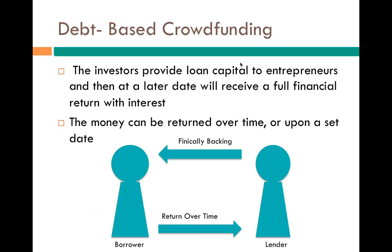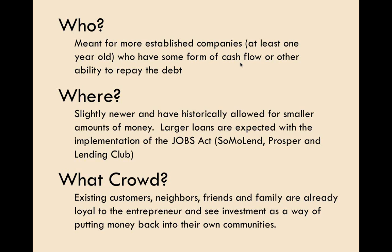Finally, debt-based is the type of platform that SomoLend is. As a borrower, you're paying the money back and providing an interest rate return over time to a lender. This is very different from the first three forms and is meant for more established companies — restaurants, retailers that already have loyal customers who would want to grow as you grow. There are two live platforms: Prosper and Lending Club for consumer loans, and SomoLend for commercial debt. The crowd you're tapping into here is much more tied to your customers, existing friends and family, and your own local community.